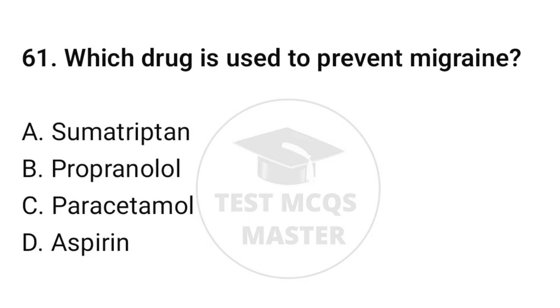Question number sixty-one: which drug is used to prevent migraine? The correct option is B: Propylthiouracil.